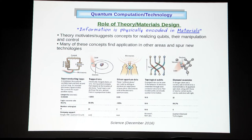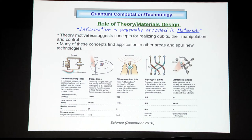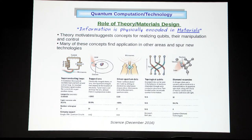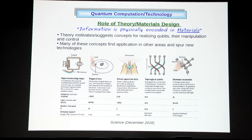Different platforms are being discussed for building quantum computers and quantum technology, such as superconducting loops, trapped ions, silicon quantum dots, topological qubits, and diamond vacancies. It is a frontier research question to determine which platform is most suited. Behind all of this, the role of materials is enormous, because information is physically encoded in materials. Unless you understand the materials, making anything out of them is difficult.